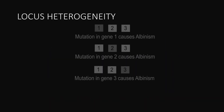When mutations occur at different loci and they produce a similar phenotype, this is referred to as locus heterogeneity. Albinism is an example where mutations are occurring in multiple loci yet producing a similar phenotype.